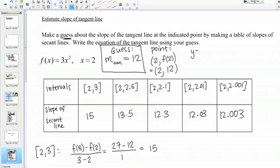That's going to be y minus the y value, which is 12, equals the slope, which is also 12, times x minus the x value. Then if I want I can simplify this to get it in y equals form. This is y minus 12 equals 12x minus 24, and then I add 12 to both sides and get y equals 12x minus 12.